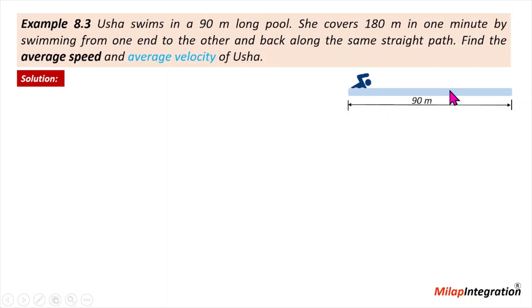This means the straight path is like this, and then she went to the other direction and then she came back. The total distance is 90 meters, that is why she covered 180 meters.